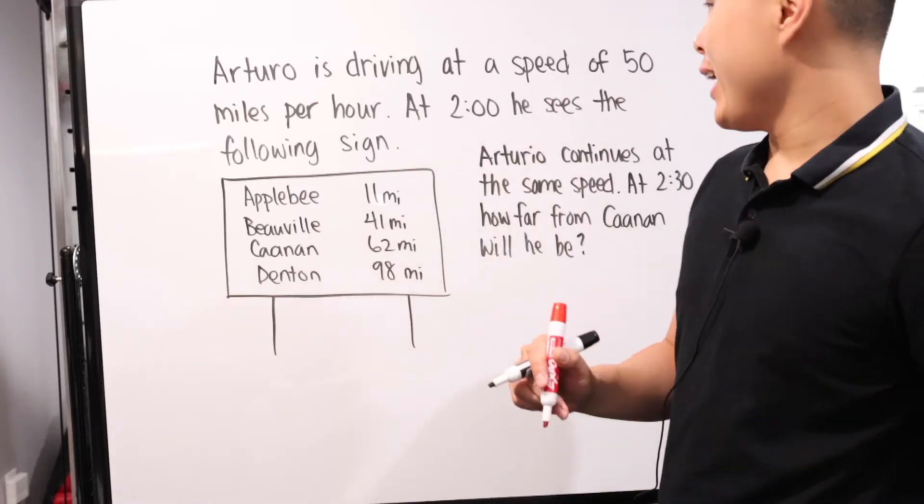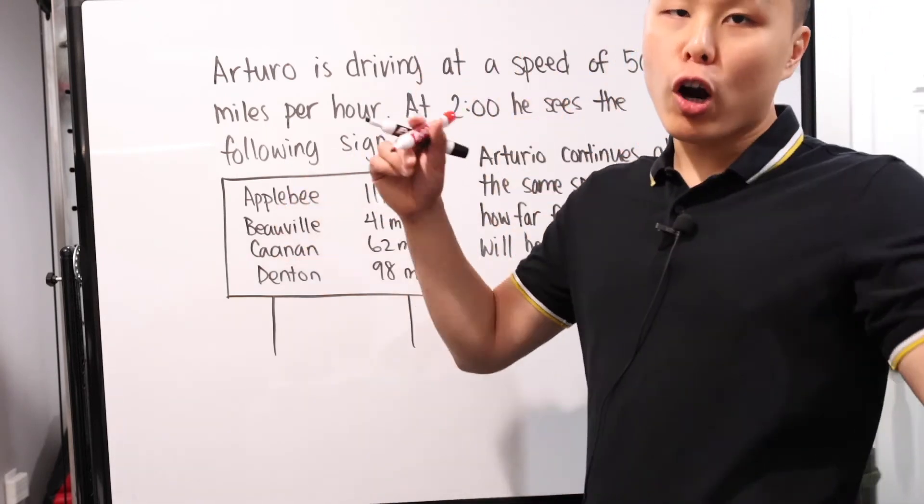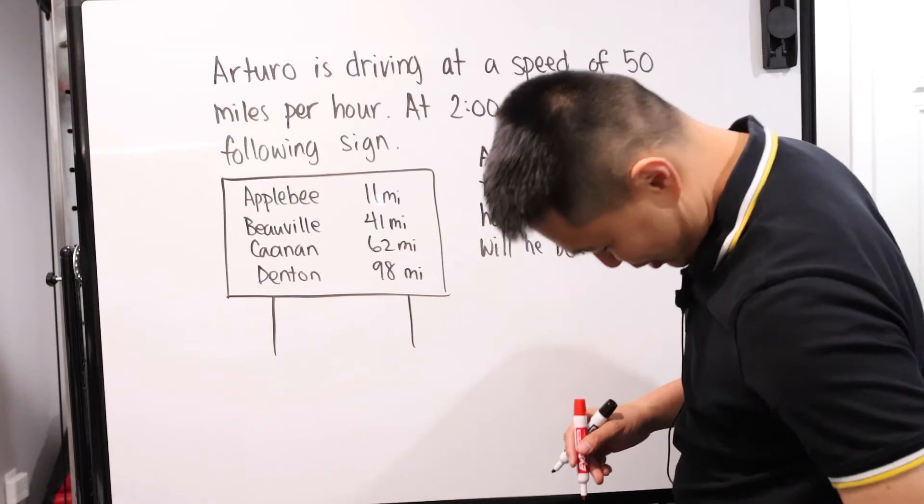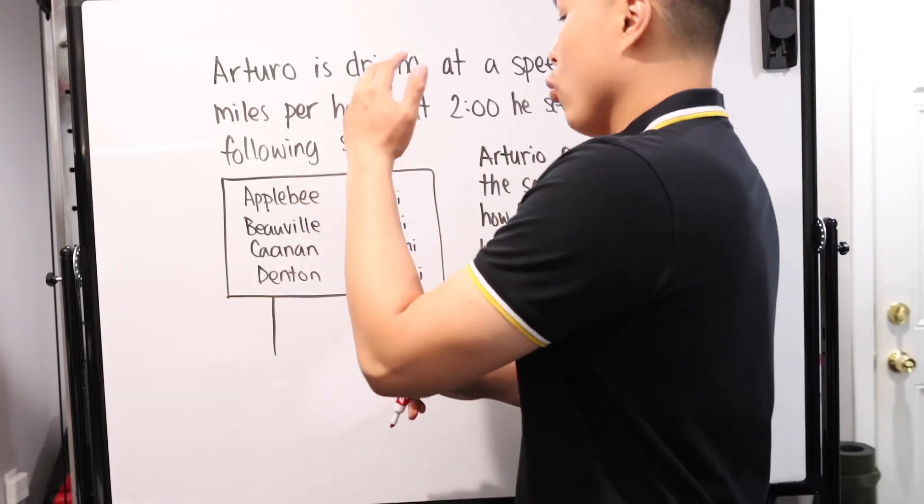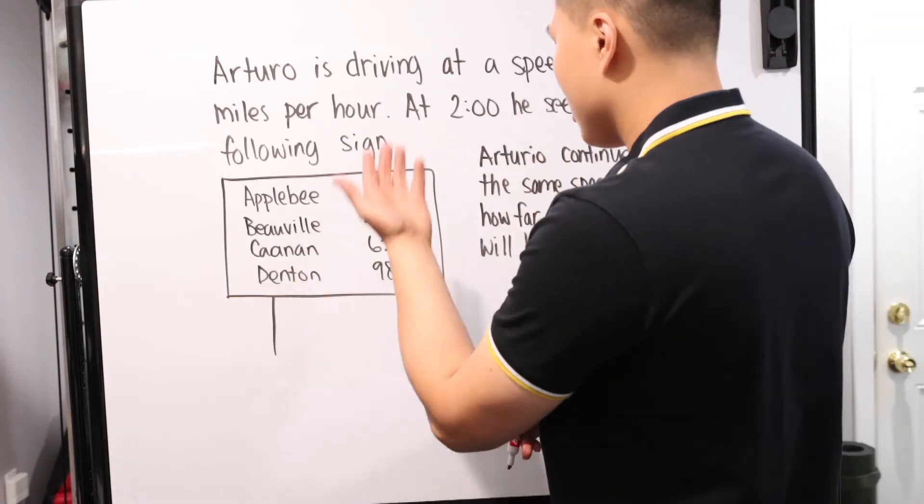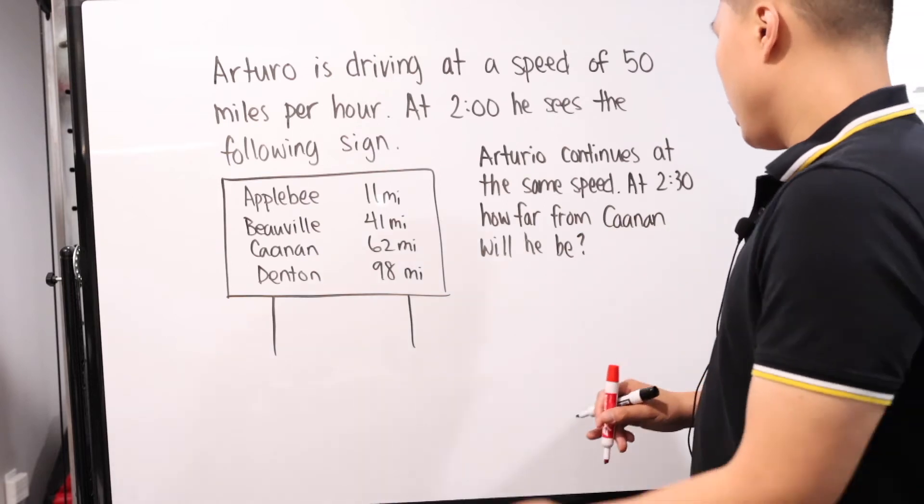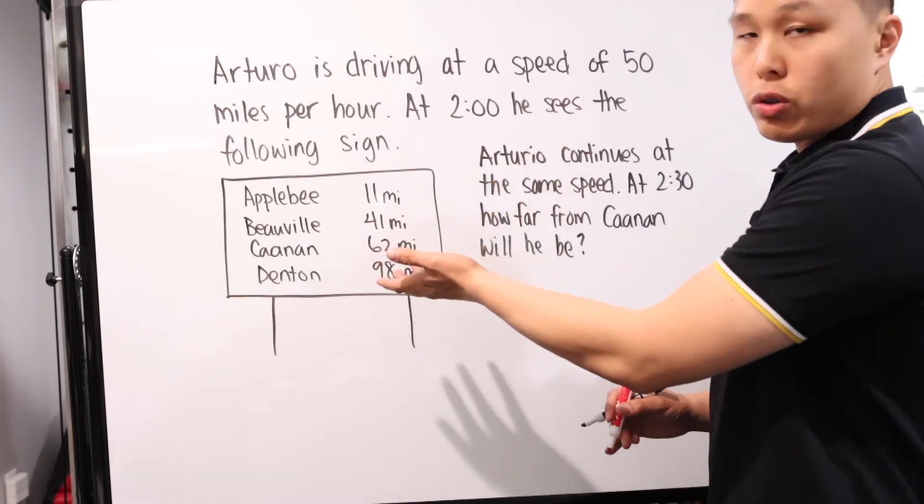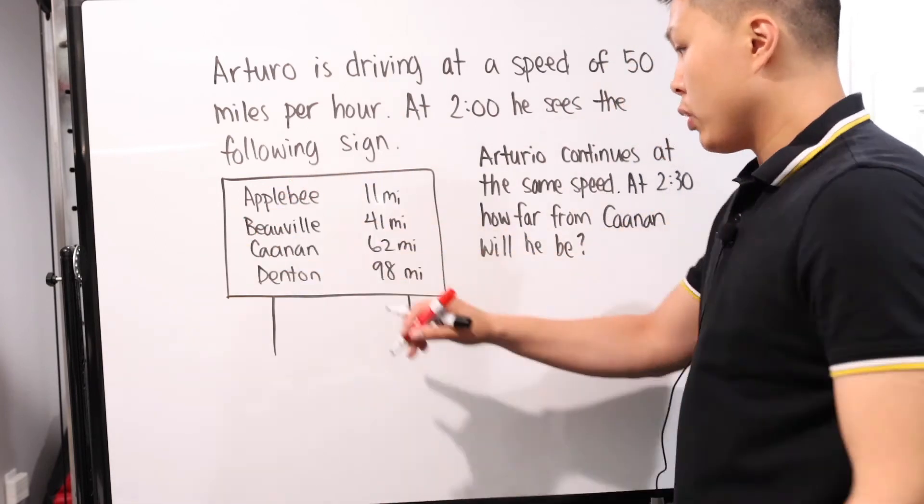Our final problem for today is a fairly simple problem. You have a sign which we rarely pay attention to nowadays. Basically usually we have these signs that tell us how far away we are from either a specific city, specific exit, so on and so forth when you're driving. Arturo is driving at the speed of 50 miles per hour. At 2 o'clock he sees this following sign. Usually when you see that sign, that's basically where you are pinpointed and then how far away these things are. You have Applebee's 11 miles, Bellevue 41 miles, and Canaan 62 miles, and Denton 98 miles. Arturo continues at the same speed. At 2:30, how far is he from Canaan?